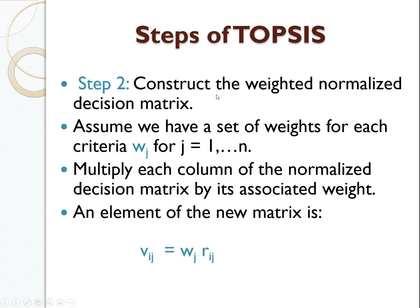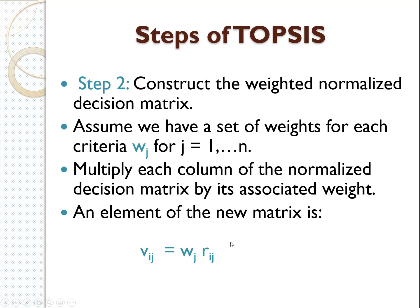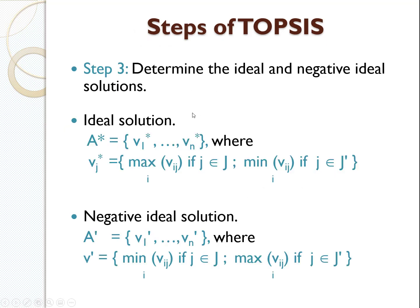Step 3 is to determine the ideal and negative ideal solution. One thing to note: some researchers use the Analytical Hierarchy Process (AHP), using the pairwise comparison matrix and multiplying it with the weights, and you can also do that. For the ideal solution — denoted with an asterisk — we choose the maximum for benefit criteria and the minimum for cost criteria. For the negative ideal solution — denoted with S dash — this is the opposite: we choose the minimum for benefit and the maximum for cost.